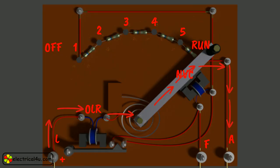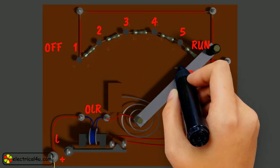Now the obvious question is, once the handle is taken to the run position, how is it supposed to stay there as long as the motor is running? To find the answer to this question, let us look into the working of no-voltage coil.